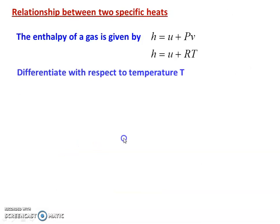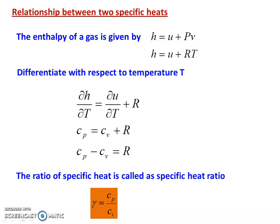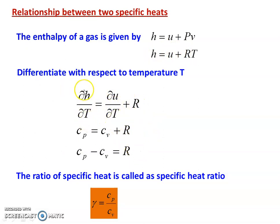The relationship between the two specific heats: H equal to U plus PV. For a perfect gas, H equal to U plus PV equal to RT. Differentiating with respect to temperature: dou h by dou T equal to dou u by dou T plus R. Since dou h by dou T is Cp and dou u by dou T is Cv, we get Cp equal to Cv plus R, or Cp minus Cv equal to R.